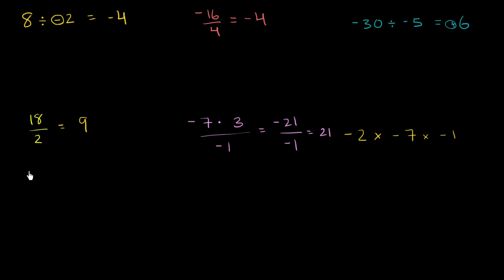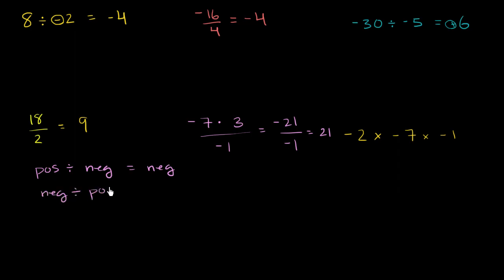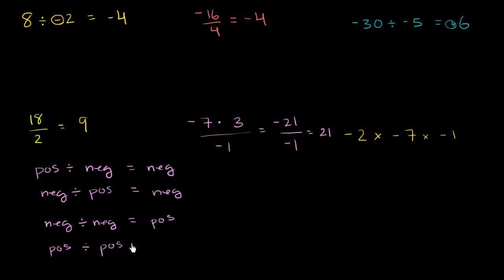Let me write all these things down. A positive divided by a negative gives a negative. A negative divided by a positive also gives a negative. A negative divided by a negative gives a positive. And a positive divided by a positive also gives a positive.